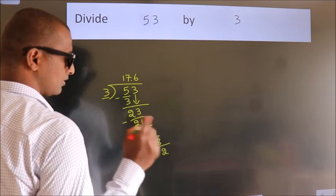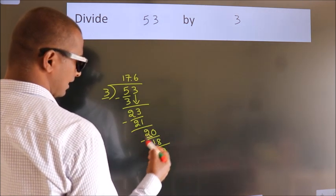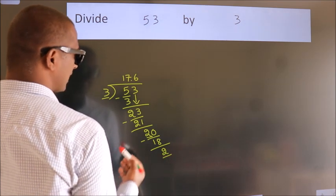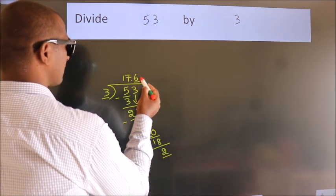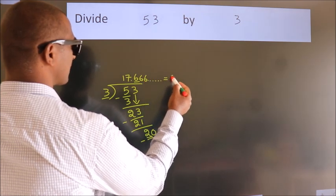Now, you observe. We had 2 here. And we got 2 again. That means, this number keep on repeating. So, this is our quotient.